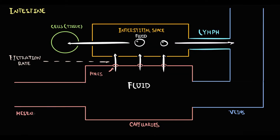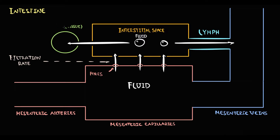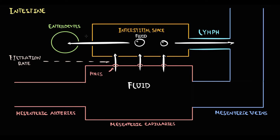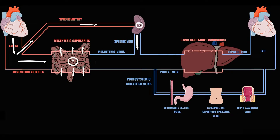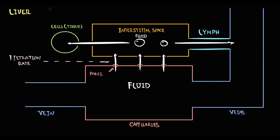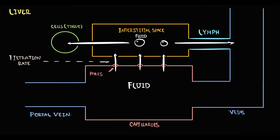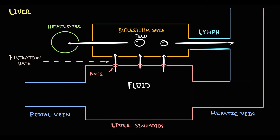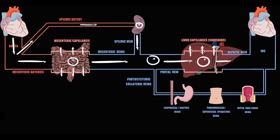In the case of the intestine, mesenteric arteries deliver blood to mesenteric capillaries, mesenteric veins provide outflow of blood from capillaries, and cells composing the intestinal tissue are called enterocytes. Blood from the spleen via the splenic vein and from the intestine via mesenteric veins is delivered to the portal vein. The portal vein drains blood into the liver, where fluid exchange occurs in liver capillaries called sinusoids. In the liver, the vessel delivering blood to sinusoids is the portal vein, the outflow vessel is the hepatic vein, and liver cells are called hepatocytes. After fluid exchange in liver capillaries, blood goes to the hepatic vein and then to the inferior vena cava.